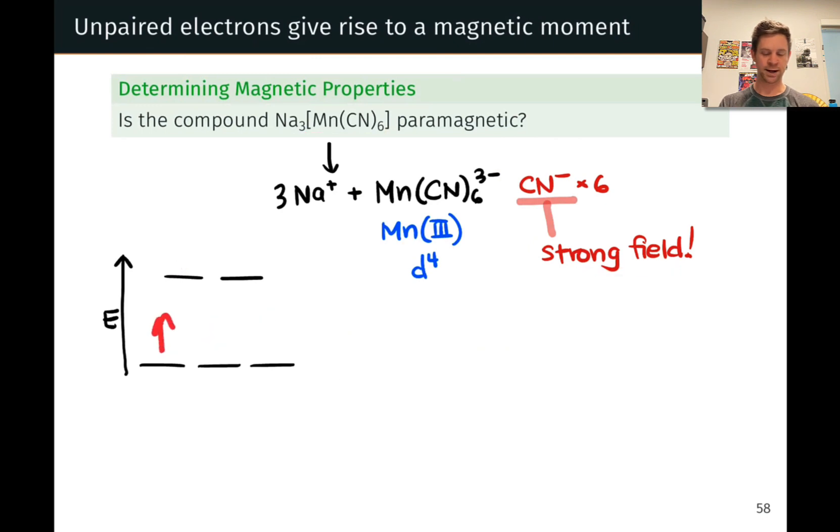Instead, we are going to pair that 4th electron with one of the electrons in the lower energy levels, and end up with an occupancy like this. And we end up with 2 unpaired electrons.